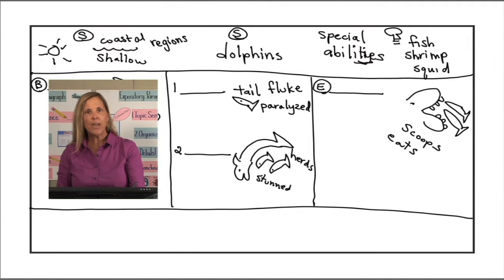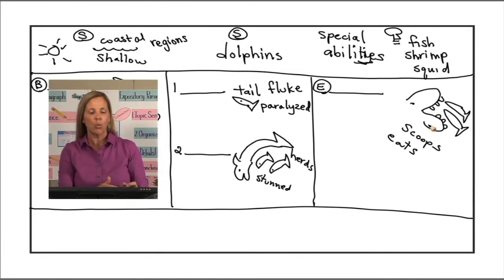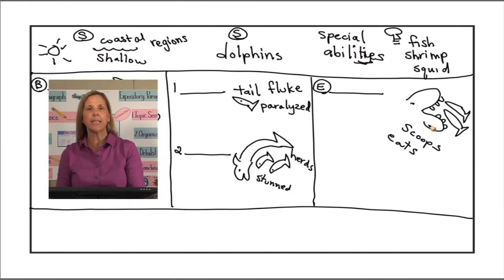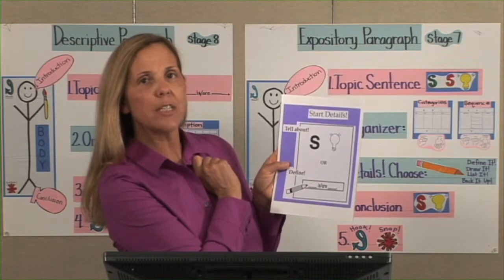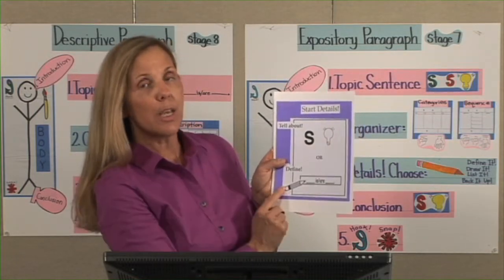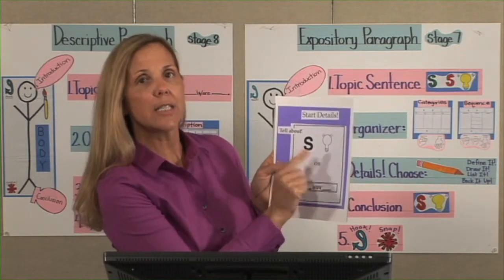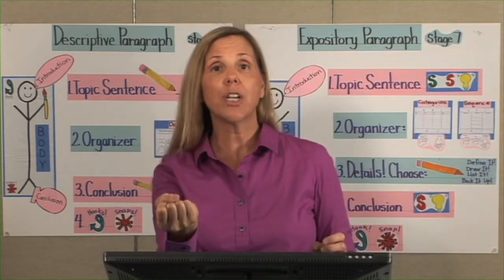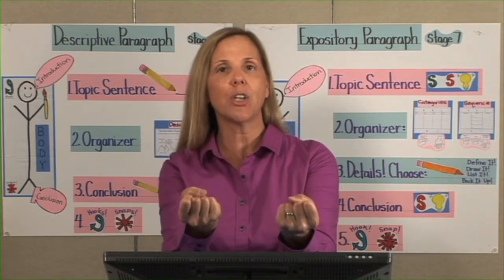We have our introduction and body. Where do we need to head next? Conclusion. In the conclusion, repeat the topic sentence but use different words using the secret formula SS light bulb. Instead of dolphins, how about 'these amazing mammals'—because it is quite amazing what they do. These amazing mammals have a unique method to catch their meals. We have all of our information.